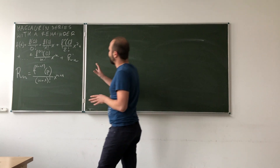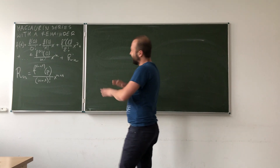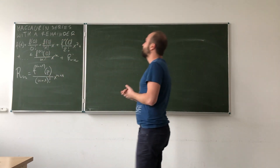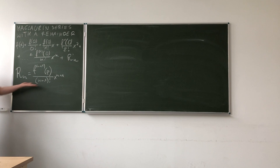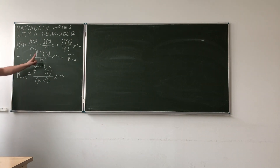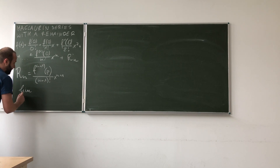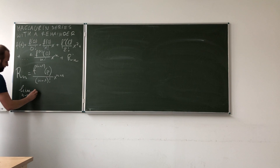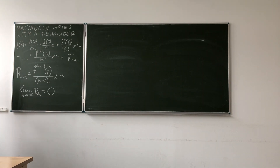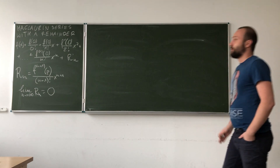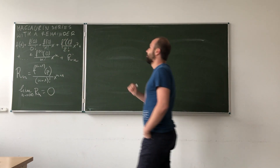So we will have a difference — a remainder. This will be the difference between the actual value of the function at a given point and the value we obtain using the Maclaurin series. Here we have the formula that is called the Lagrangian form of the remainder. And why is this important? Because if we have the limit as n approaches infinity of our R_n equal to 0, then we can use this transformation without worrying that our formula will not work in general form.